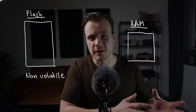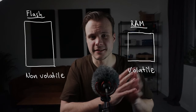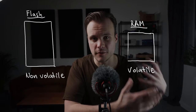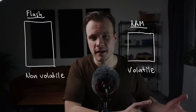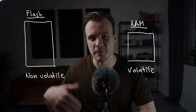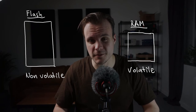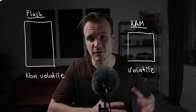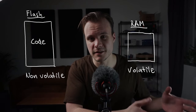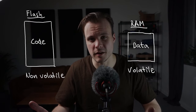The flash memory is non-volatile while the RAM is volatile. Whatever you store on the flash memory is going to stay there even if you power off the microcontroller, while whatever you store in RAM is going to be lost when you power it off. They are also used for different purposes.